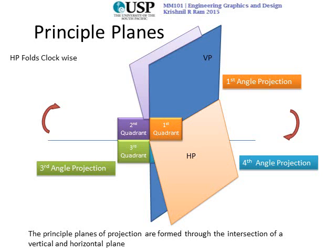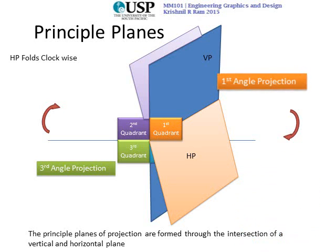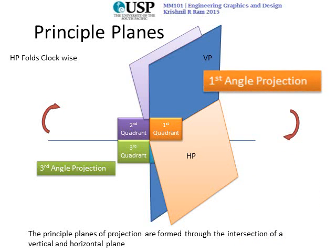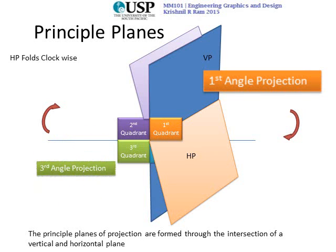As a result, the views in those projections collapse on themselves — the horizontal and vertical planes fold onto each other and you won't be able to see any projections. The only places where you can see useful projections are the first angle projection and the third angle projection.